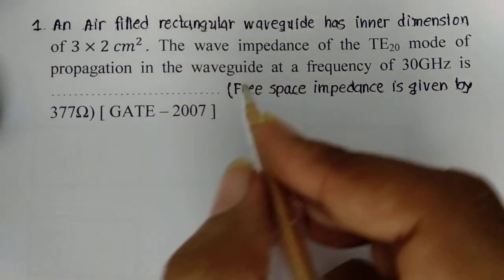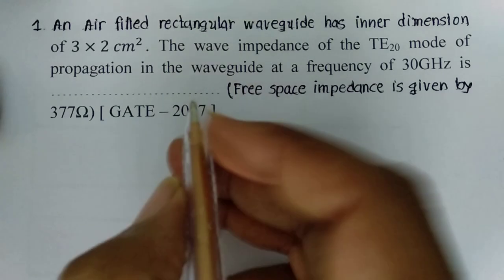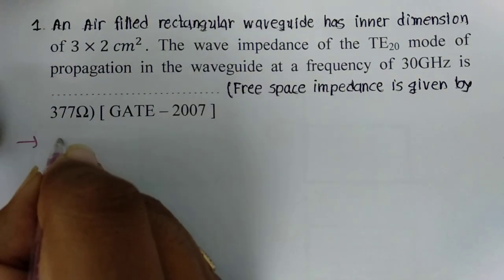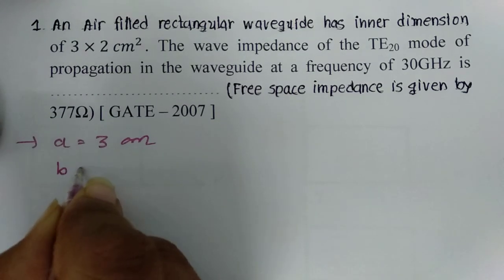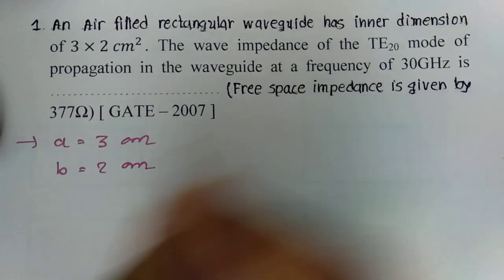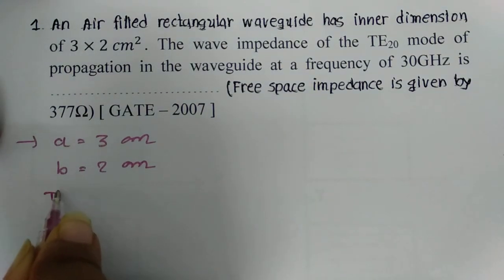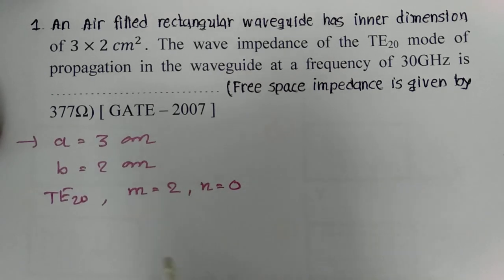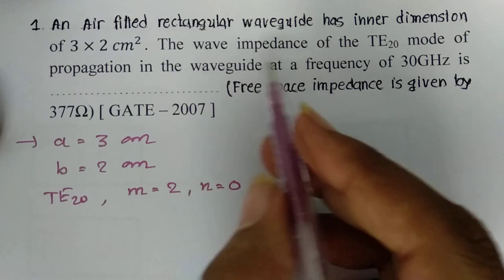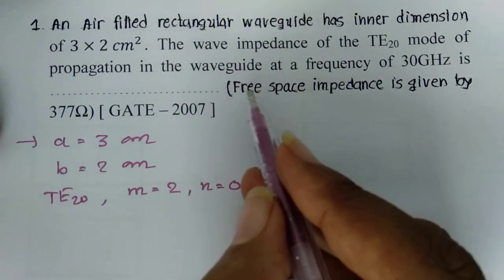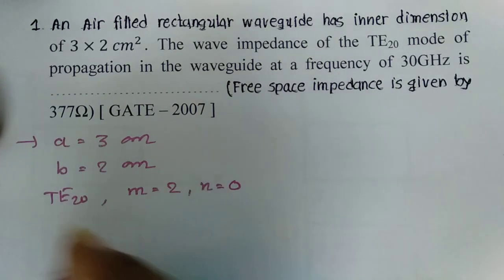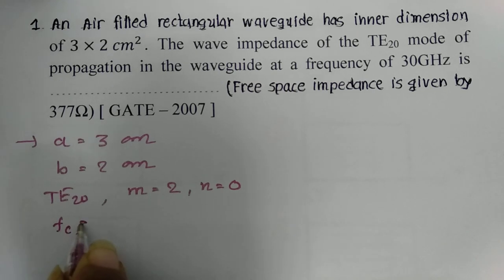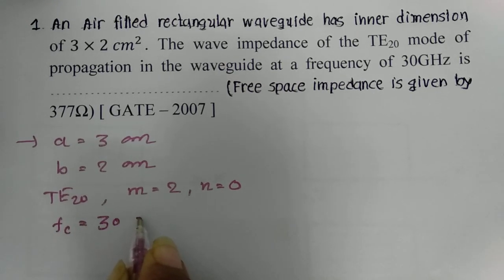In GATE 2007, one example was based on a rectangular waveguide with dimensions 3×2 cm², so A = 3 cm and B = 2 cm. The mode of operation given was TE20, resulting in M = 2 and N = 0. Wave impedance at TE20 mode propagation in the waveguide happens at frequency 30 GHz.